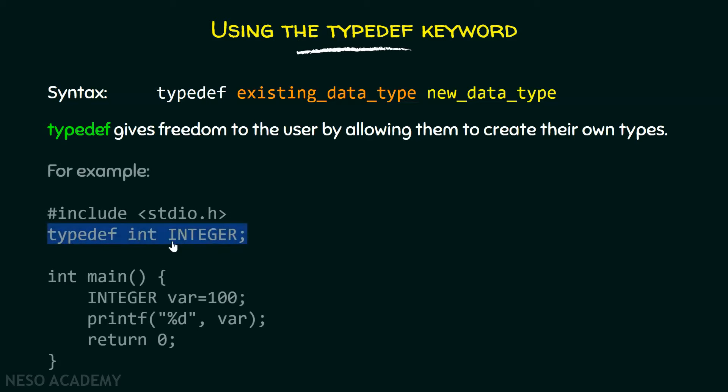For example, this is the old type and this is the new type. Old type is now replaced by new type. Wherever we use int, we can use integer. For example, within this main function, int can be replaced by integer.